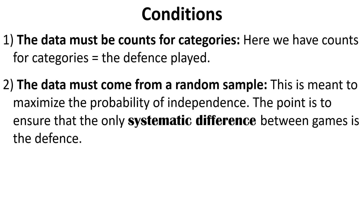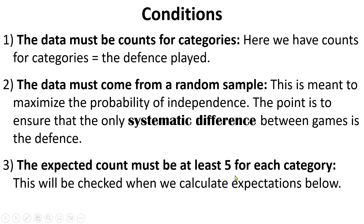Second, the data must come from a random sample. No matter what test we're conducting, the data must always come from a random sample, and this is meant to maximize the probability of independence. Specifically, the point is to ensure that the only systematic difference between the games is just the defense that was chosen. Finally, the expected count for each category must be at least five. We can't check this right away because we only have observed counts — we will have to compute the expected counts before we can test this condition.